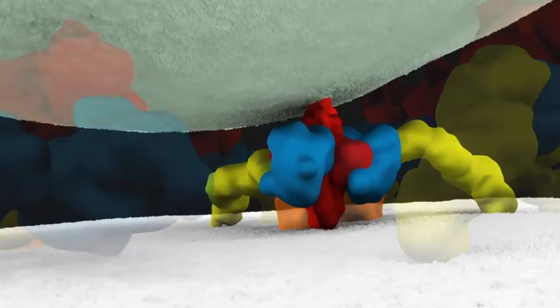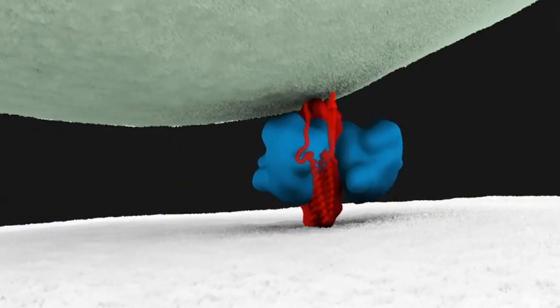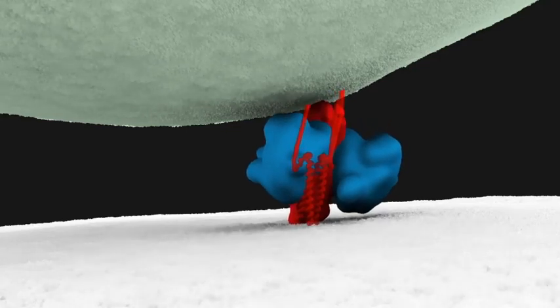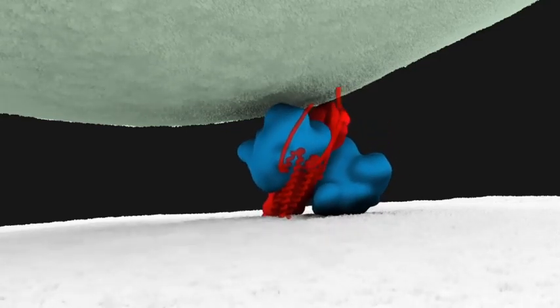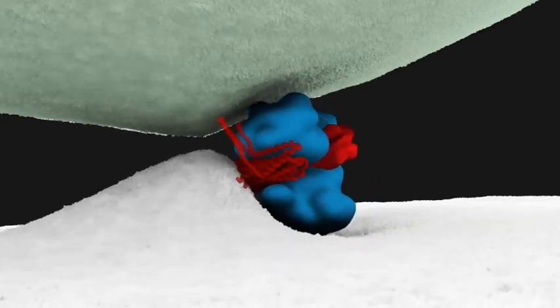The first conformational change allows envelope protein to insert into the membrane of the T cell. Next, envelope protein folds back on itself, forcing the fusion of the T cell membrane with the viral membrane.